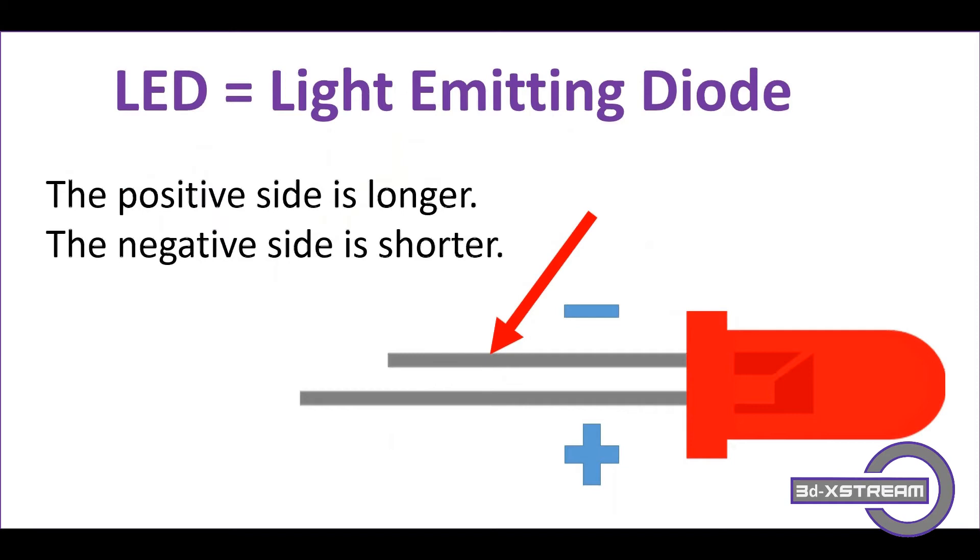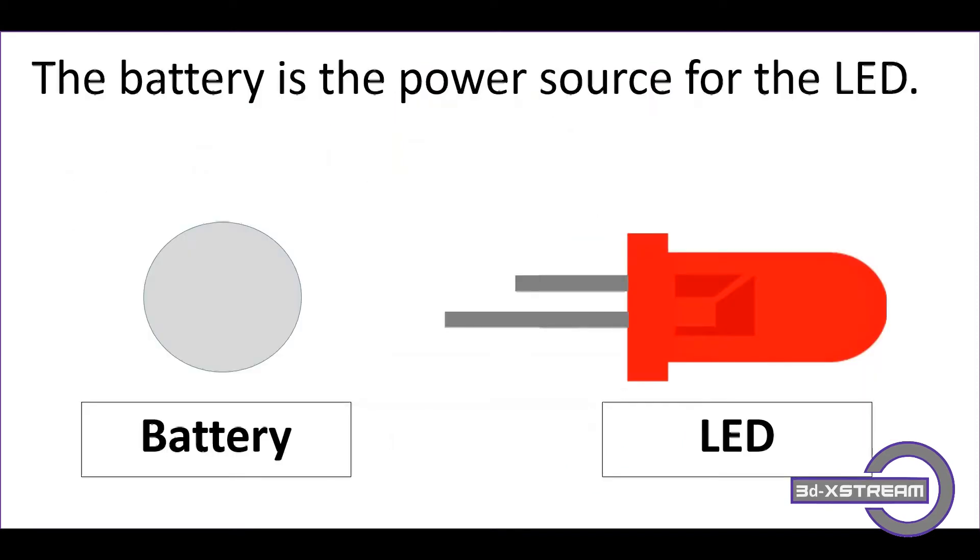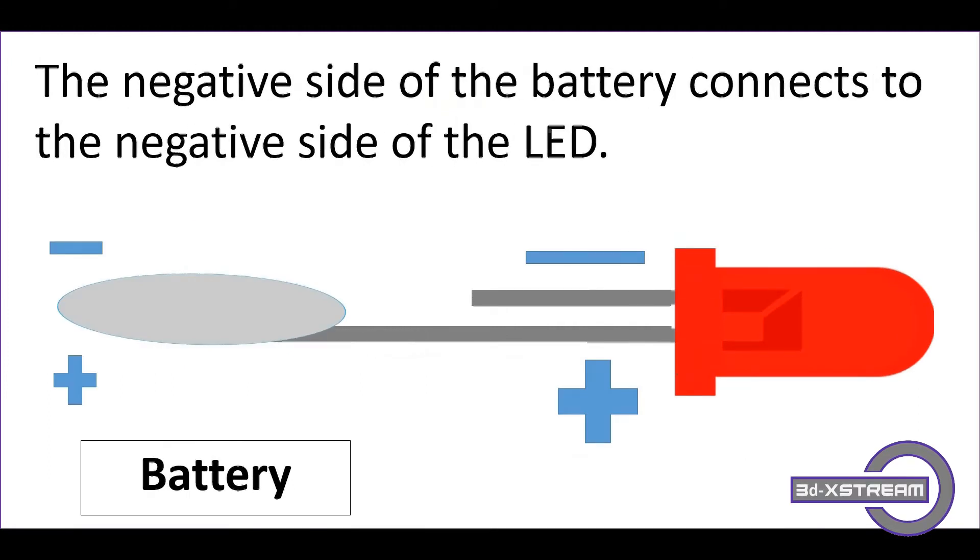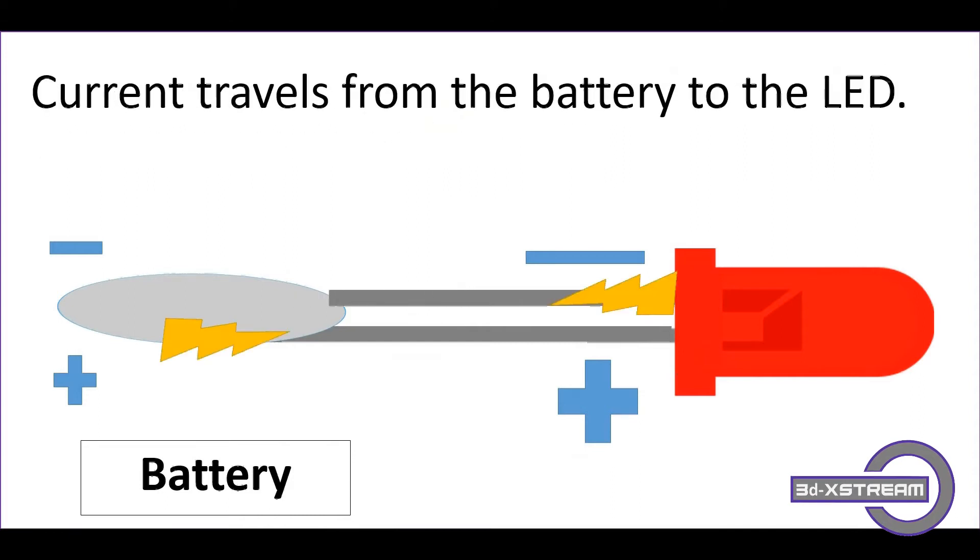The battery is the power source for the LED. The positive side of the battery connects to the positive side of the LED, while the negative side of the battery connects to the negative side of the LED. The current travels from the battery to the LED which gives it its light.